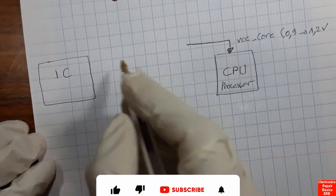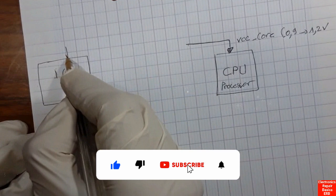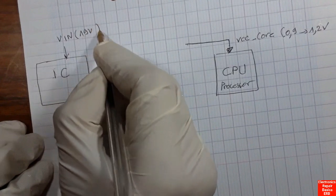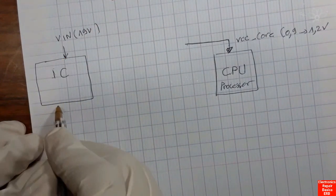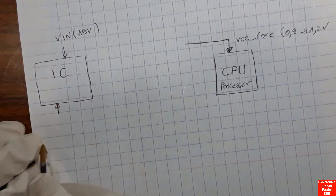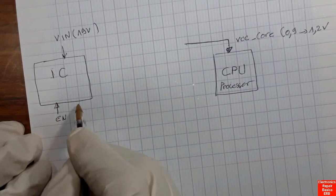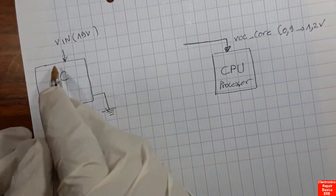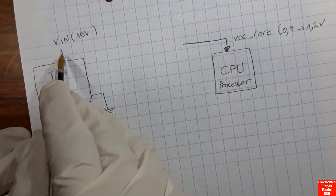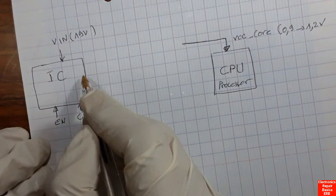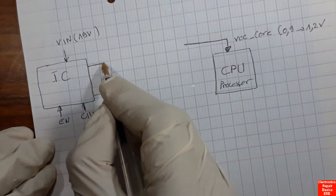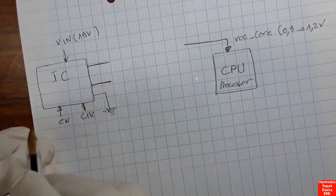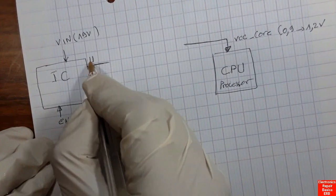To get this power, we need some components. First, we need an IC or power management IC — an integrated circuit that will be charged to generate the VCC core for the CPU. This IC itself should receive an input voltage of about 19 volts, as well as other signals like enable signals, ID signals, clock signals, etc. Of course, every IC should be connected to ground.